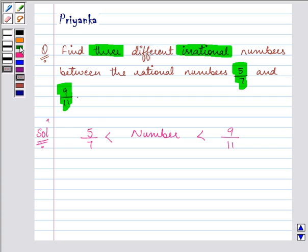First of all let us convert 5 by 7 into decimal form. And that comes out to be 0.71428571 and it goes on.